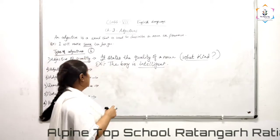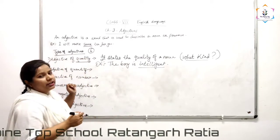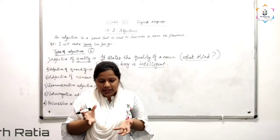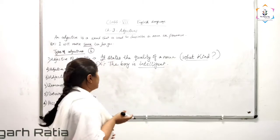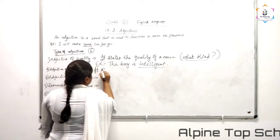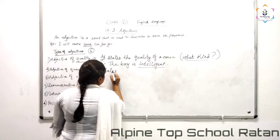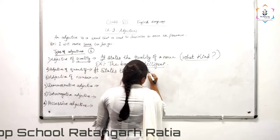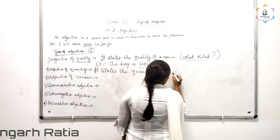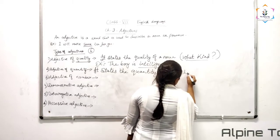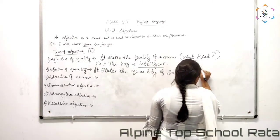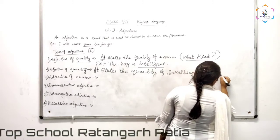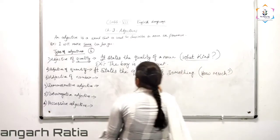Next you have adjective of quantity. Quantity itself shows the amount. It answers the question how much. It states the quantity of something.